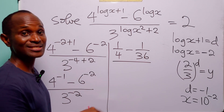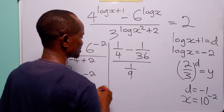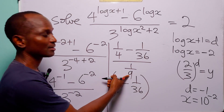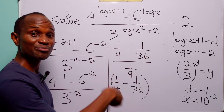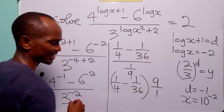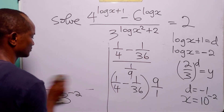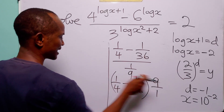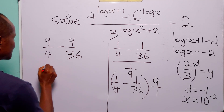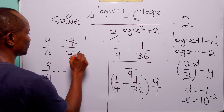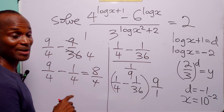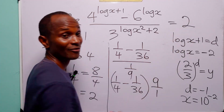Evaluating: 4 to the power minus 1 is 1 over 4, and 6 to the power minus 2 is 1 over 36. Dividing by 1 over 9 is the same as multiplying by 9. So we get 1 over 4 times 9 minus 1 over 36 times 9, which is 9 over 4 minus 9 over 36, that is 9 over 4 minus 1 over 4, giving 8 over 4 equals 2. This matches the right-hand side, confirming x equals 0.01.